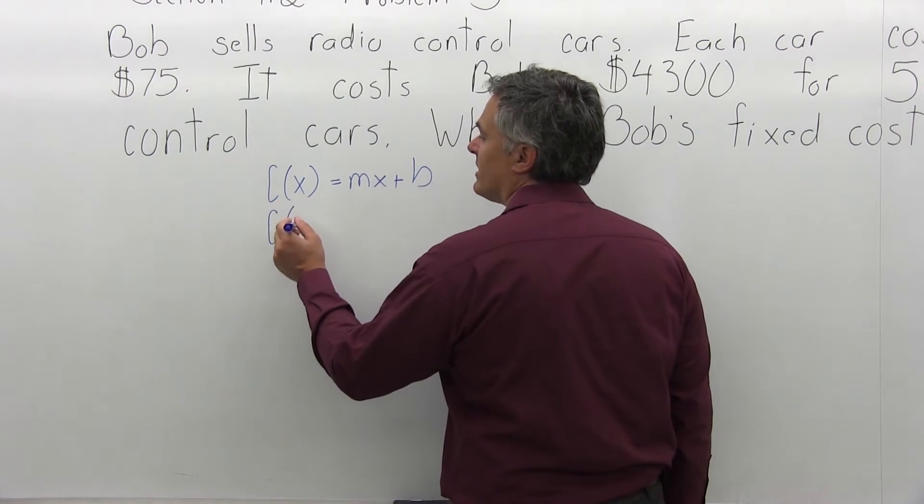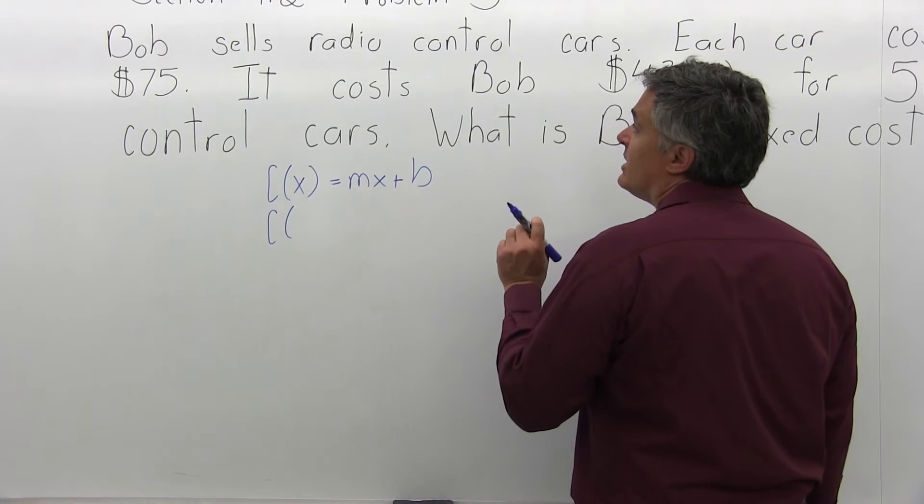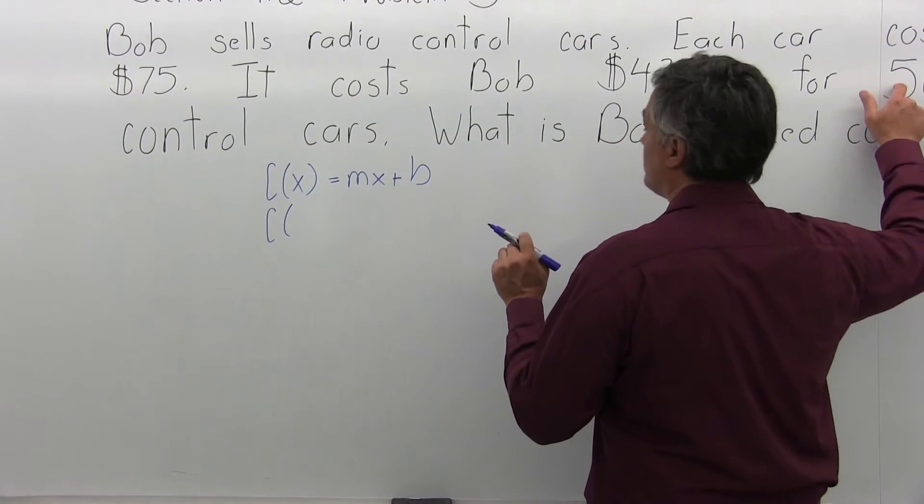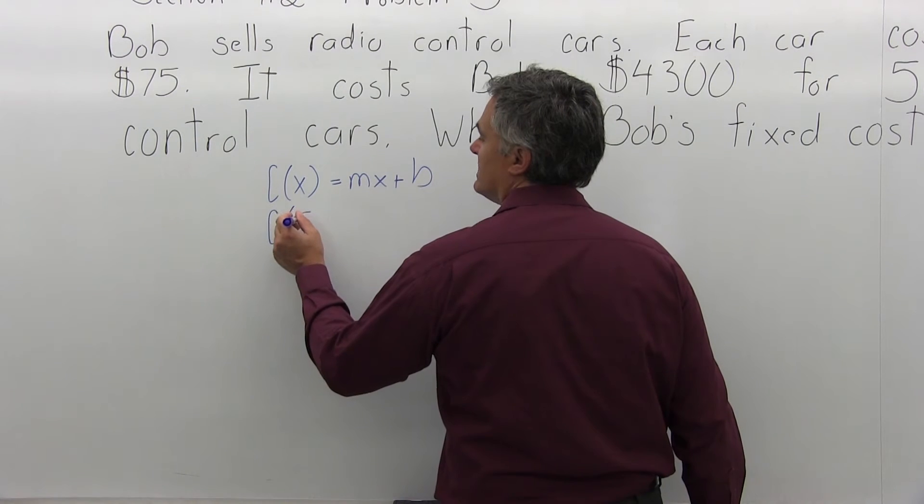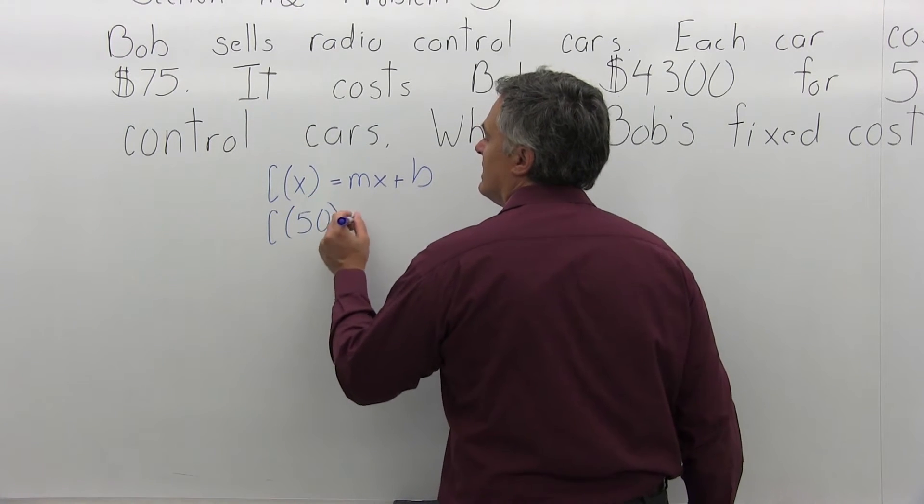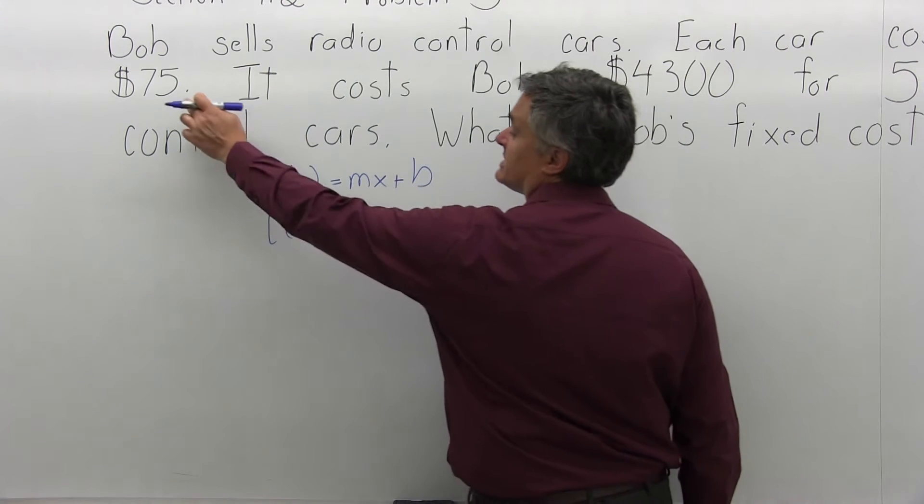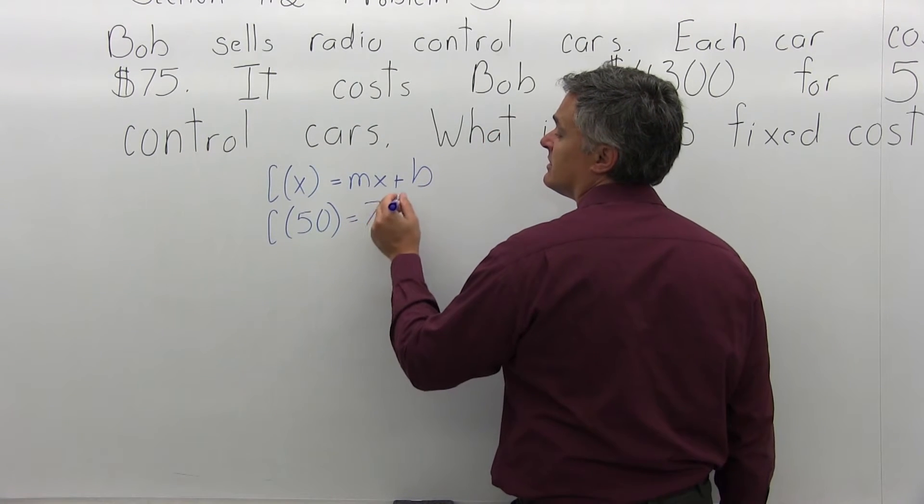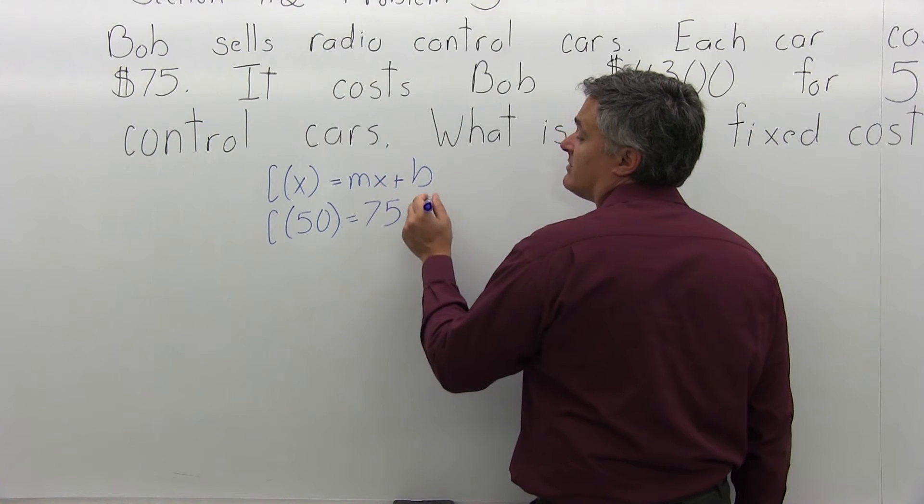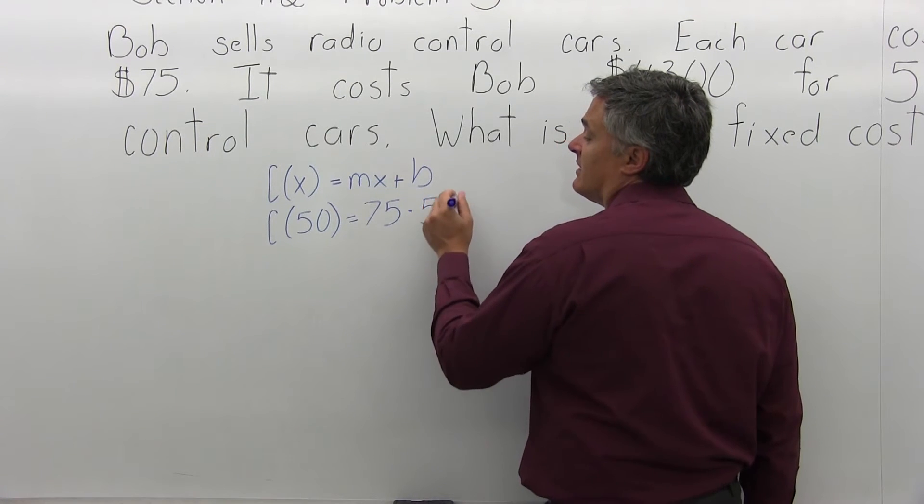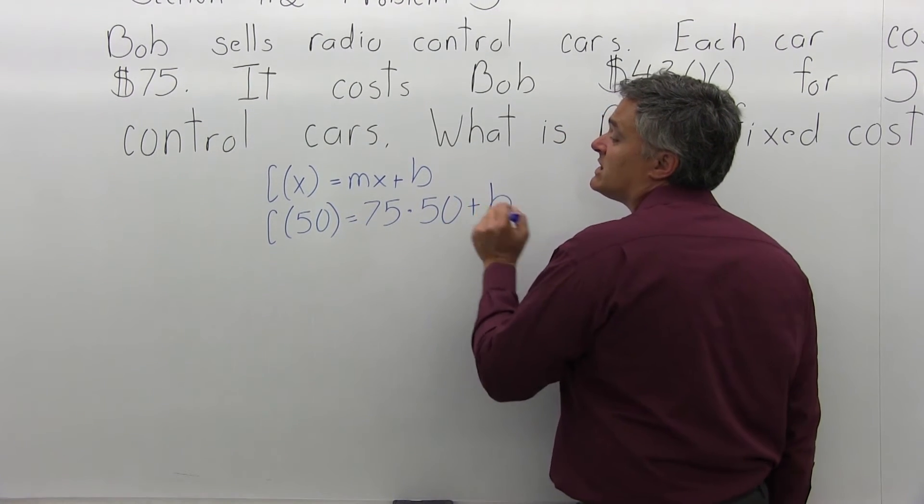So, C(X) is the number of cars, in this case, or number of items. So the problem says 50. So C(50) equals MX, and the marginal cost, the cost per item is $75, times X, the number of items is 50, and then plus B.